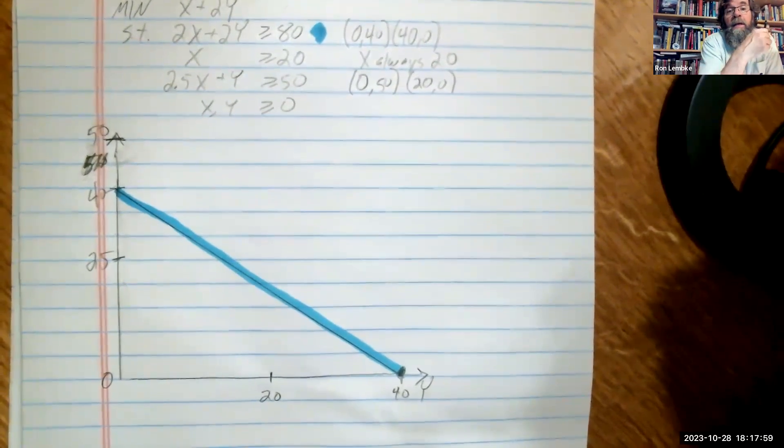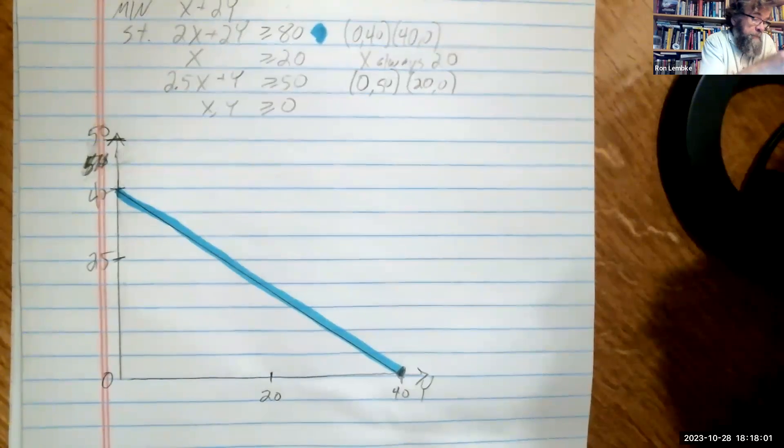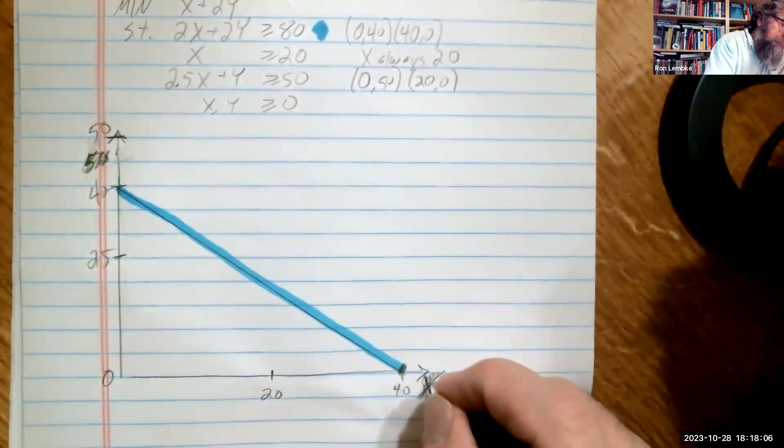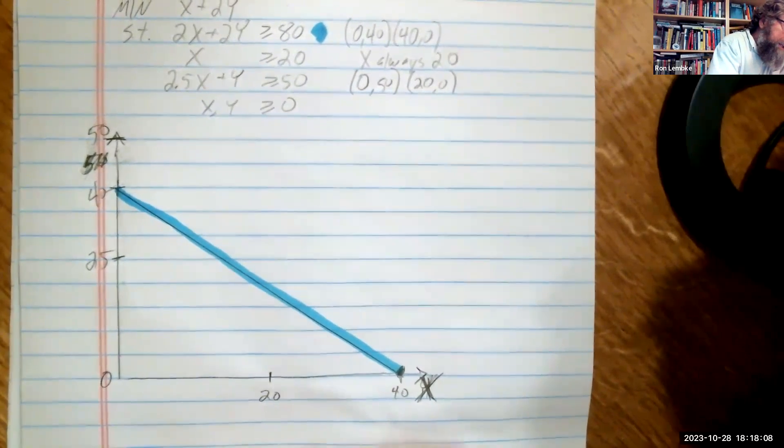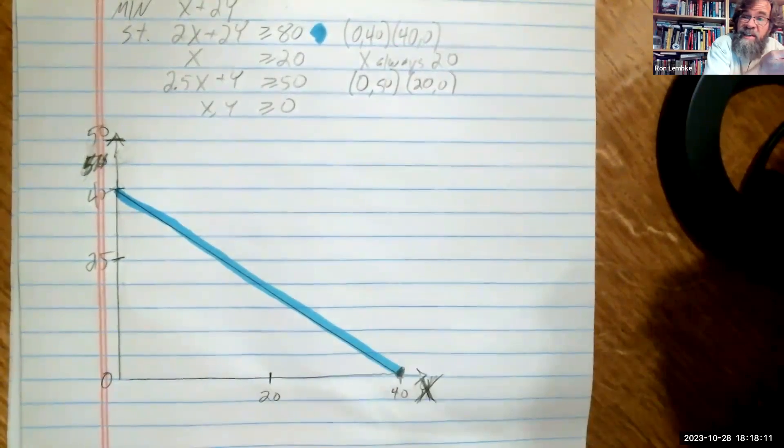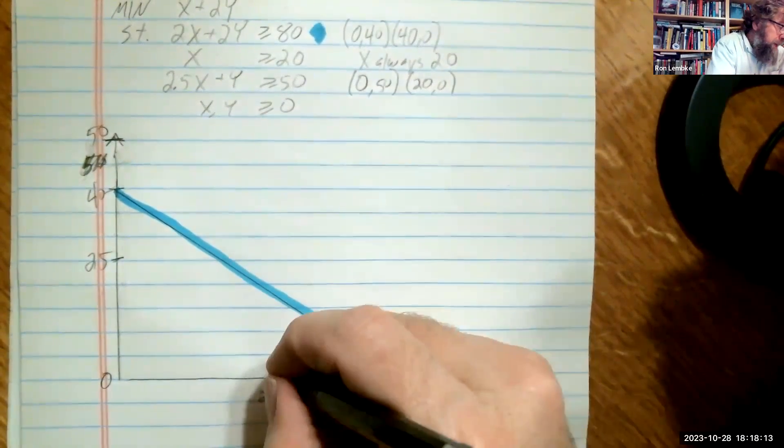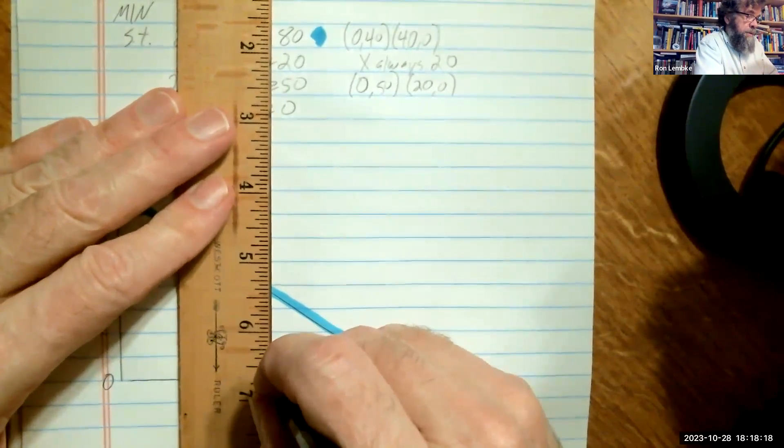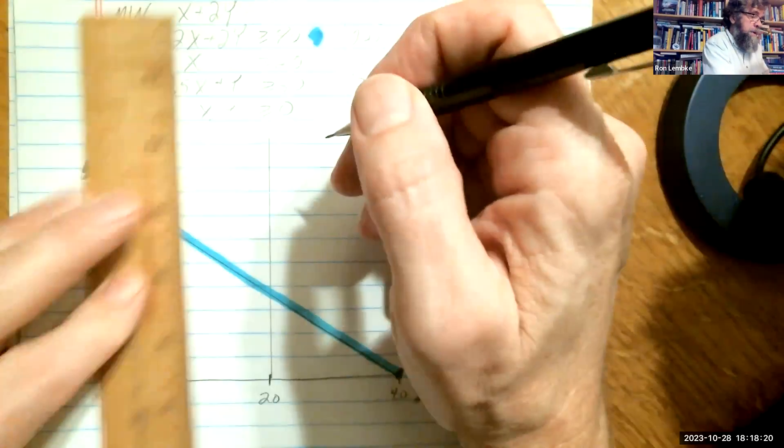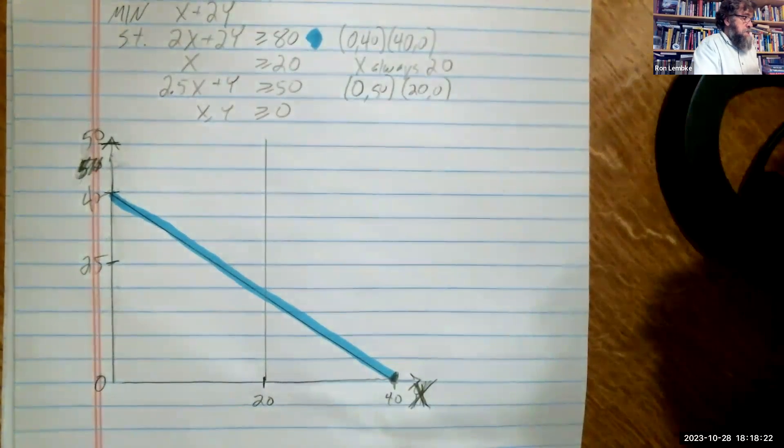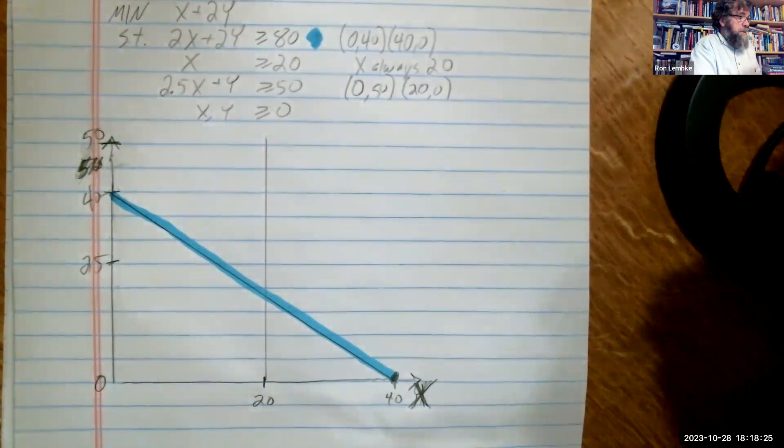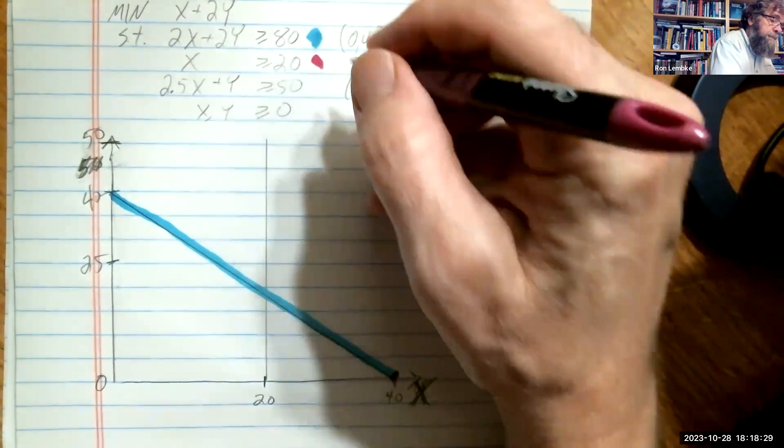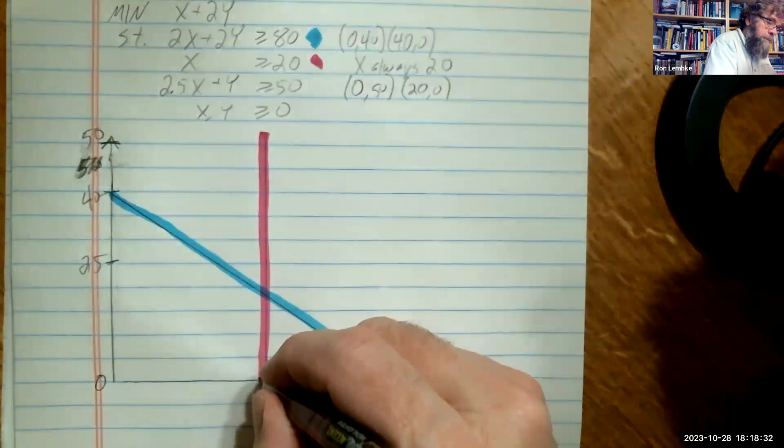Next constraint says x is always equal to 20. So this is my x-axis here, and x equals 20. So no matter what y is, x is just always equal to 20, so we're going to have a perfectly vertical line right there. And let's call that one purple.